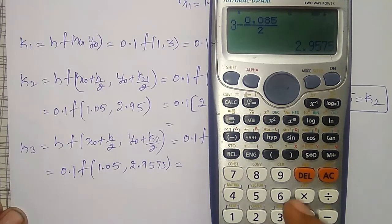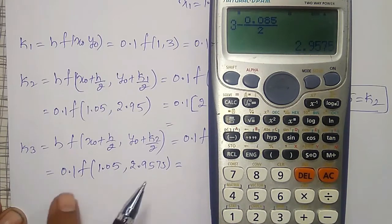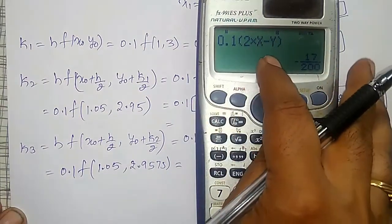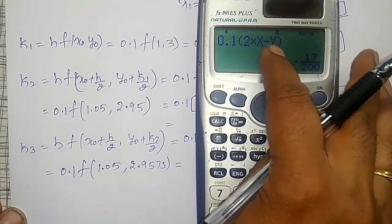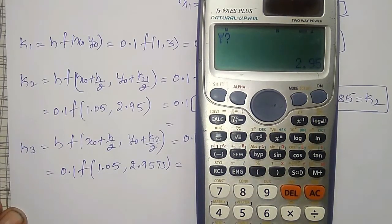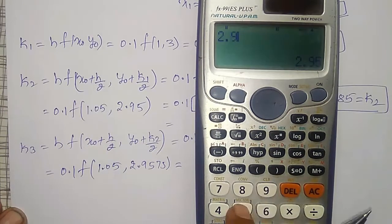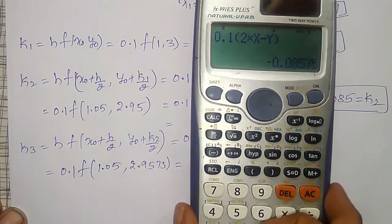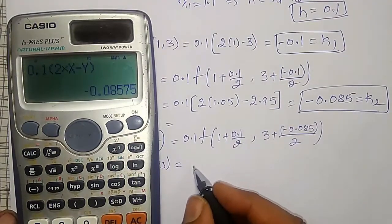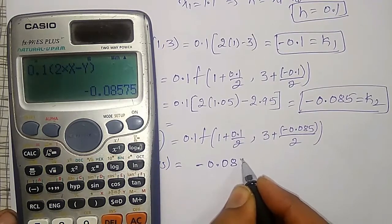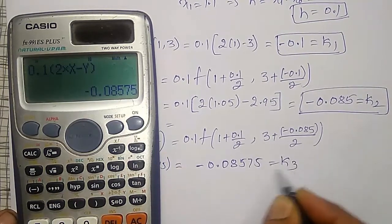f(x,y) is 2x minus y. Using the calculator with x equal to 1.05 and y equal to 2.9575, I get k3 equal to minus 0.08575. You can save time in the examination by using this calculator trick.